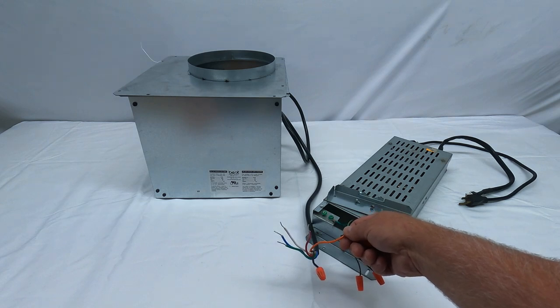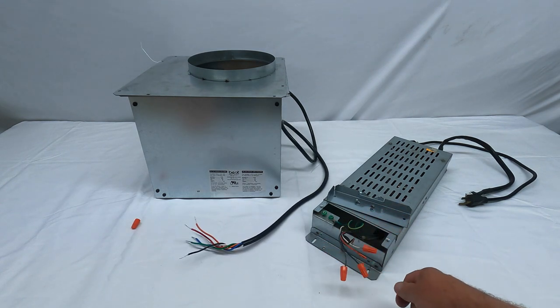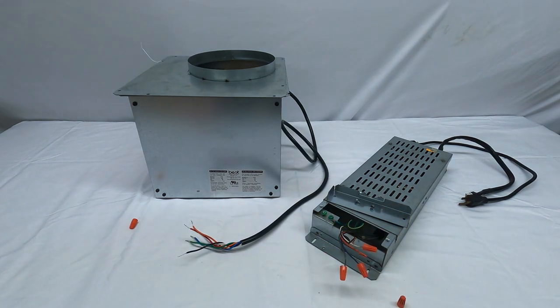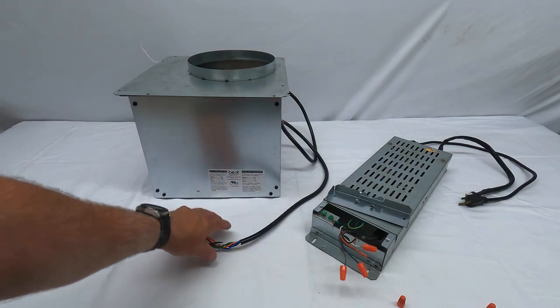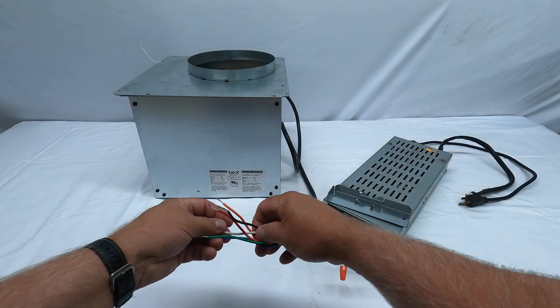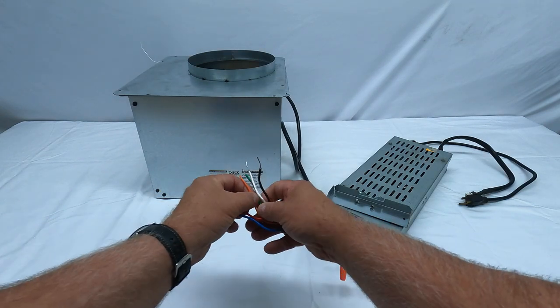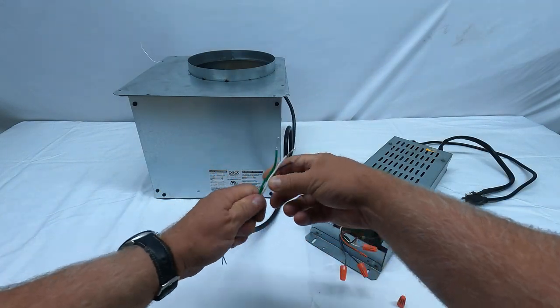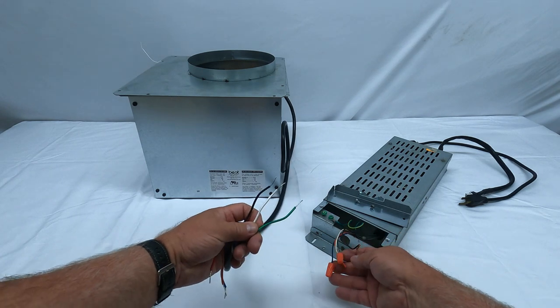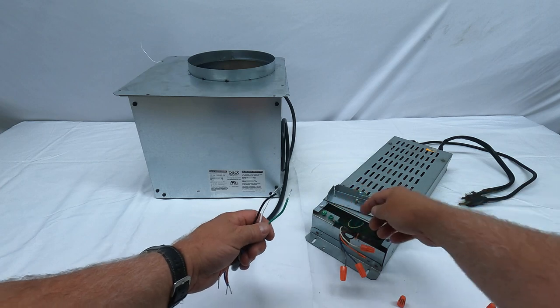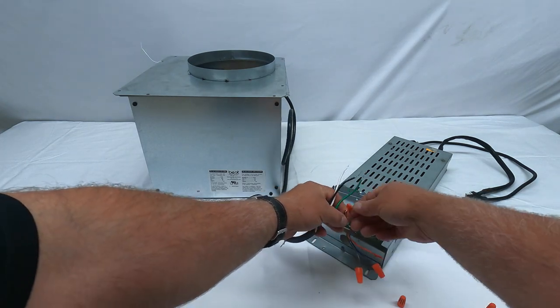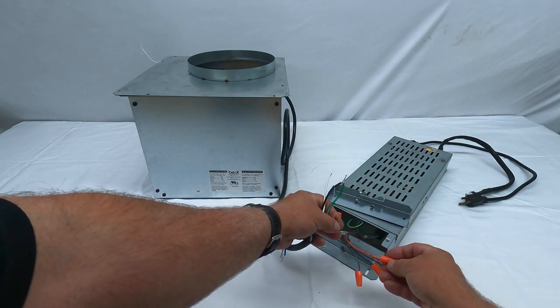Another thing I want to talk about is the Jenn-Air downdraft can use an inline or exterior blower. Let's just pretend you're not seeing the blower there. The inline and exterior blower has basically three wires that you're going to be wiring up to this electrical assembly. That's going to be black to black, white to white, green to ground, and all the rest of the wires will have a wire nut on it.